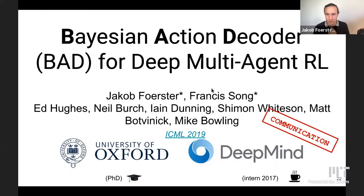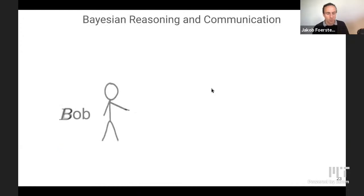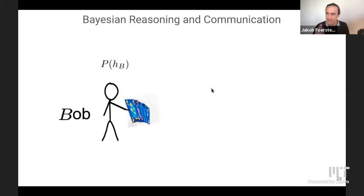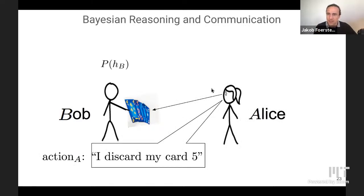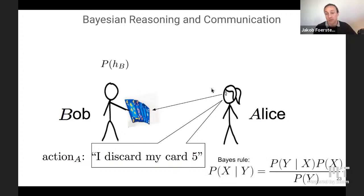We developed a method called the Bayesian Action Decoder for Deep Multi-Agent Reinforcement Learning. Let's think about what communication actually is from a computational point of view. We have our Hanabi setup where Bob is holding the cards away from himself. Bob has some belief over his own hand — the probability of his hand. Alice takes a look at Bob's hand and decides to discard her fifth card. The question is: what does this mean about the hands that Bob is holding?